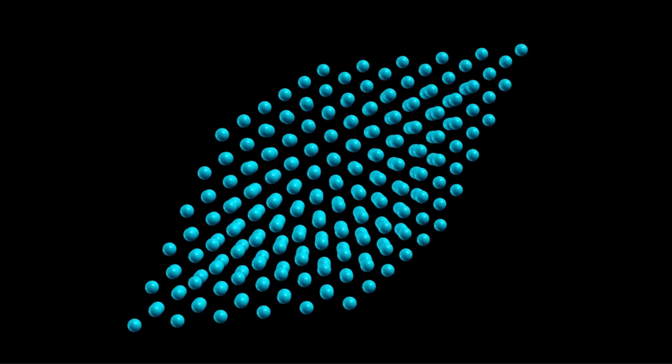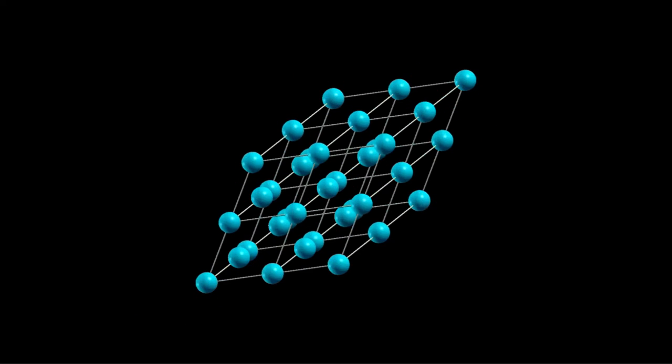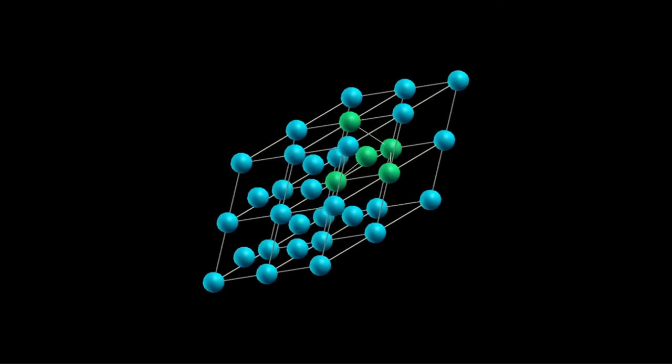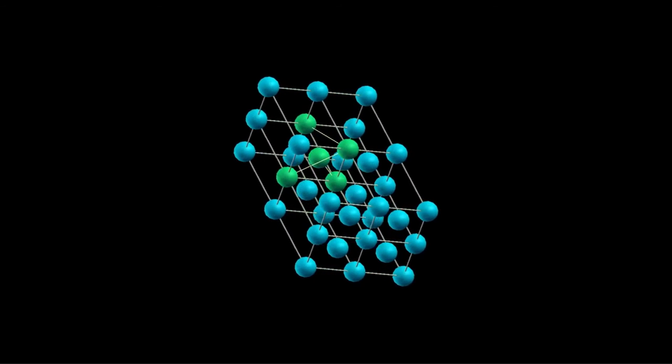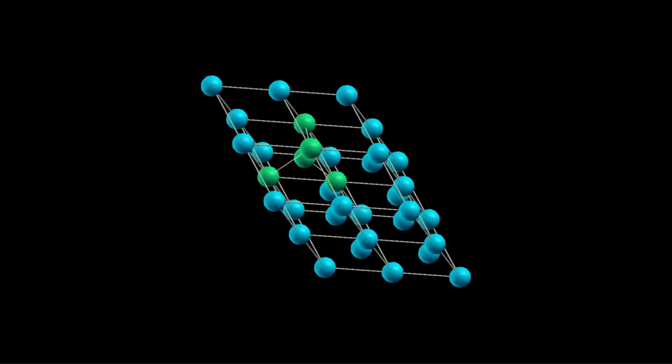Each silicon atom is surrounded by exactly four other silicon atoms with an angle of 109.5 degrees between a silicon atom and two of its closest neighbors. We say that each silicon atom is tetrahedrally coordinated.